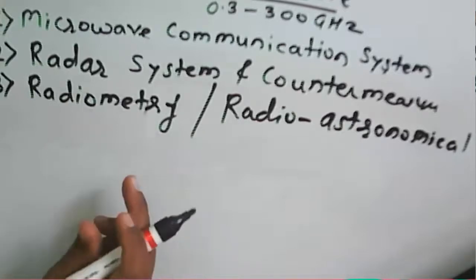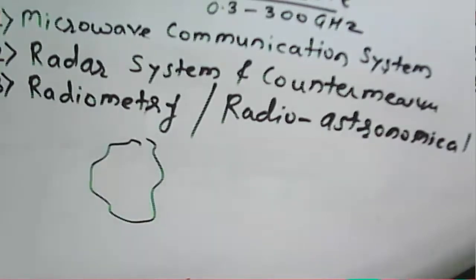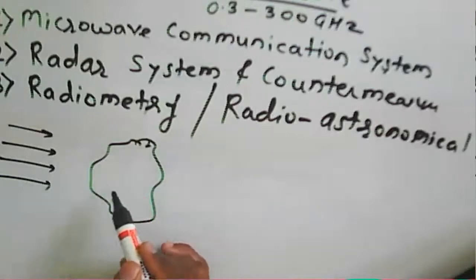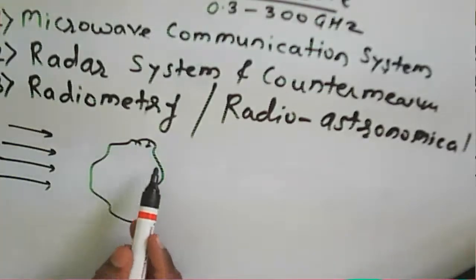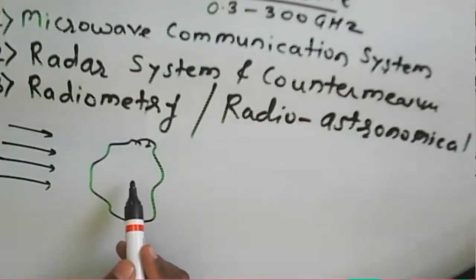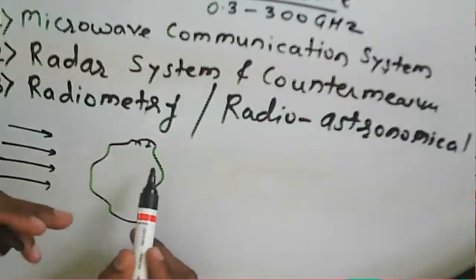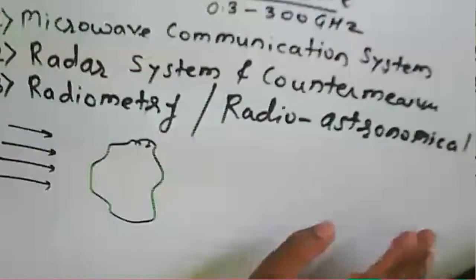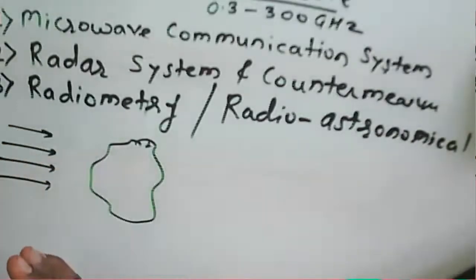In radiometry, a microwave signal is transmitted and the object in space reflects that signal. The reflection is measured to determine the size of the given object. This device functions as a radiometer — it radiates the microwave signal, the signal reaches the object, the object reflects the radiation, and from that reflection we can determine the size of the particular object.